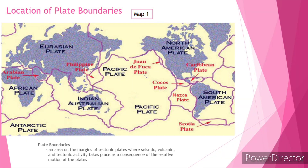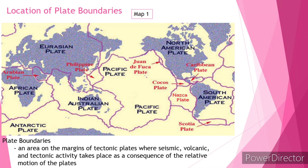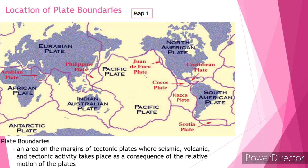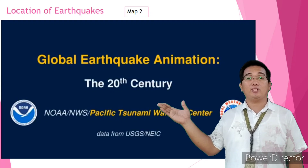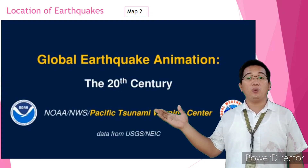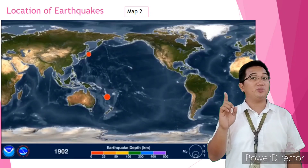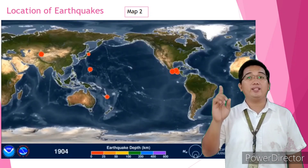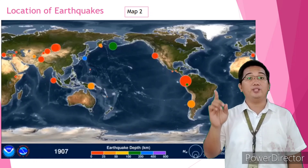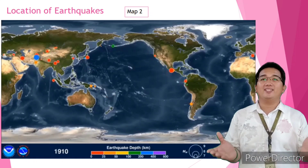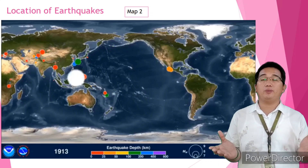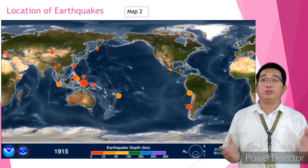Plate boundaries are an area on the margins of tectonic plates where seismic, volcanic, and tectonic activity takes place as a consequence of the relative motion of the plates. The second map is a global earthquake animation by NOAA and the WS Pacific Tsunami Warning Center. Observe the exact location of the earthquakes — the timeline of this earthquake data is from 1901 up to the year 2000.